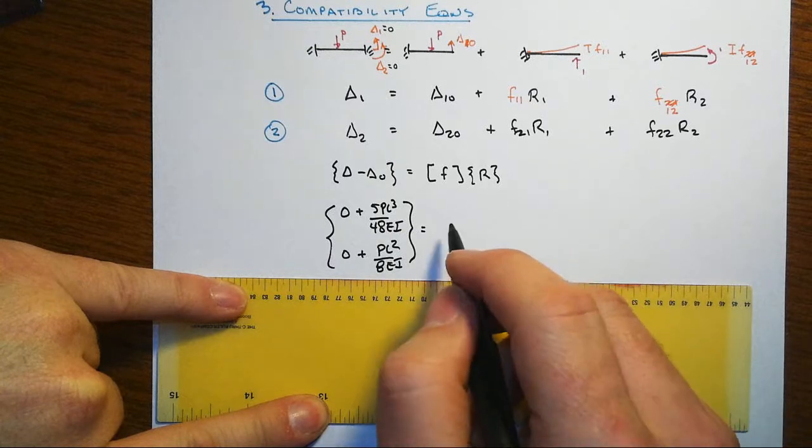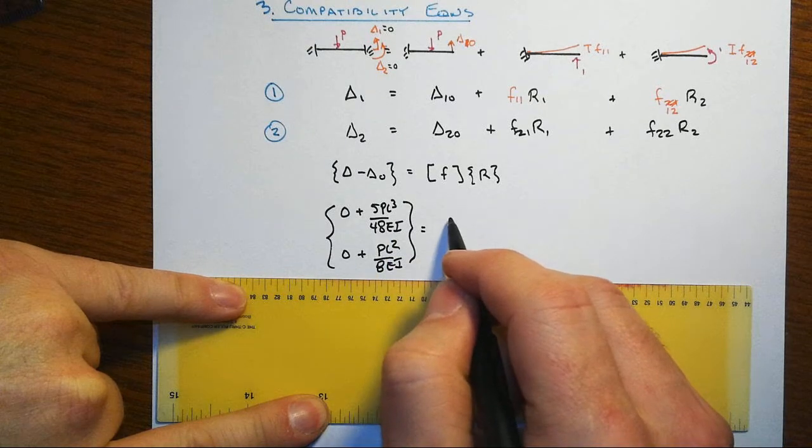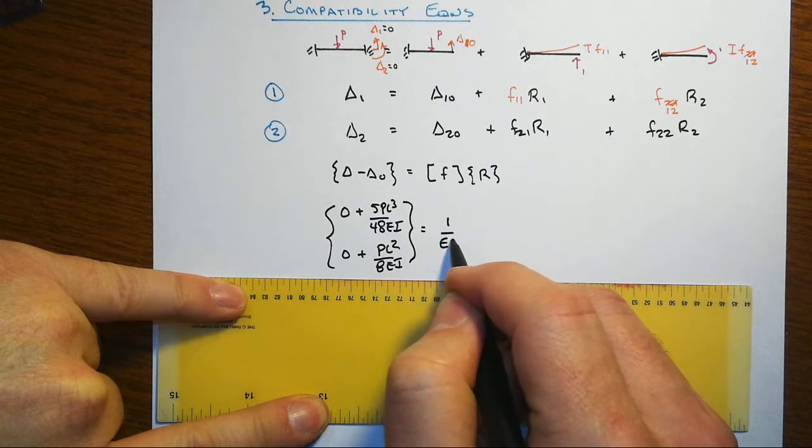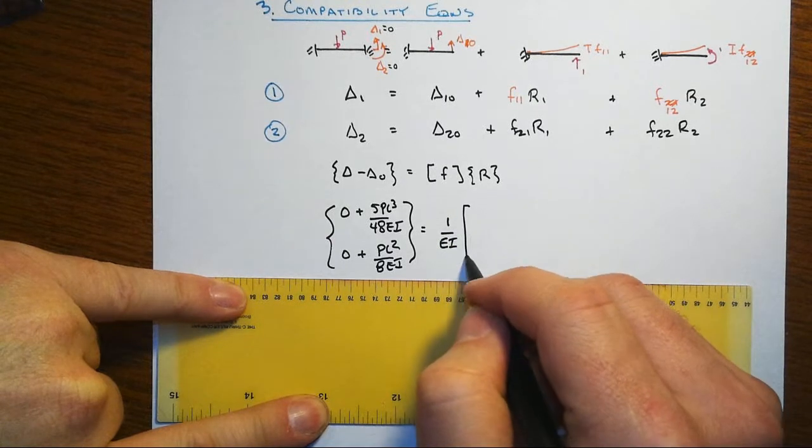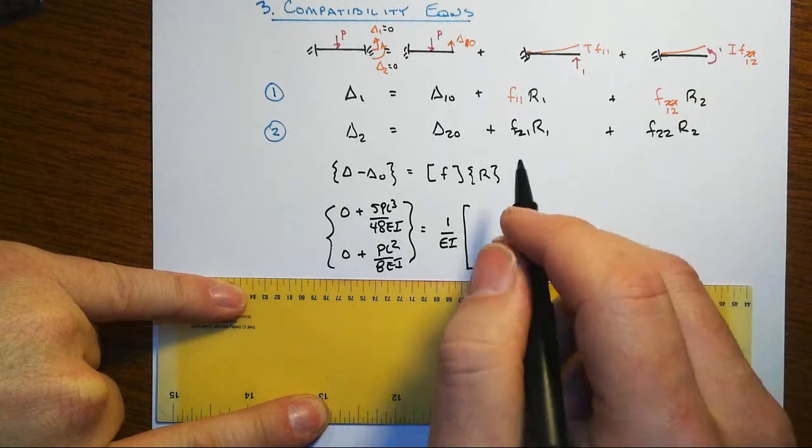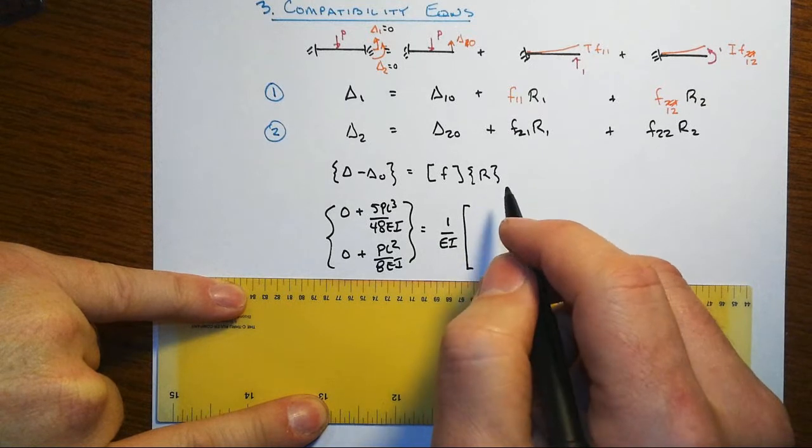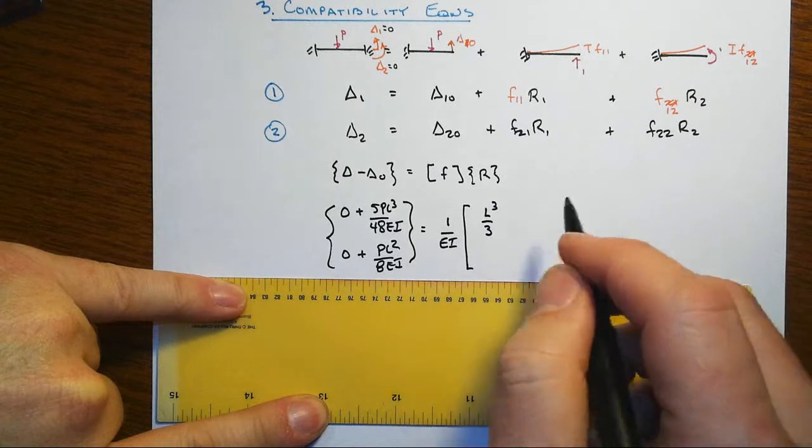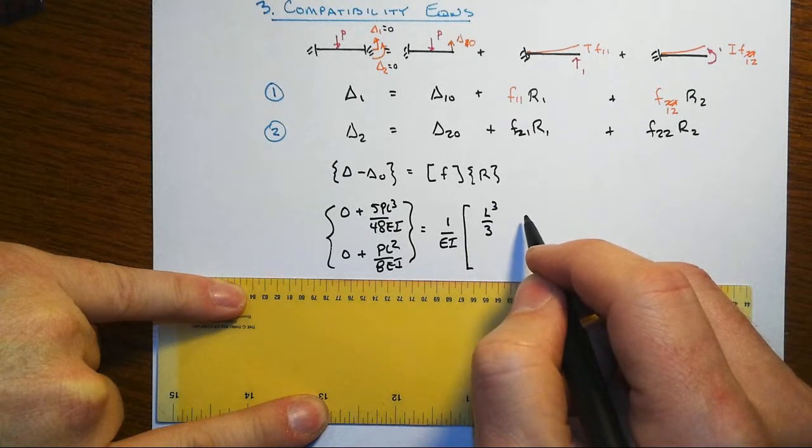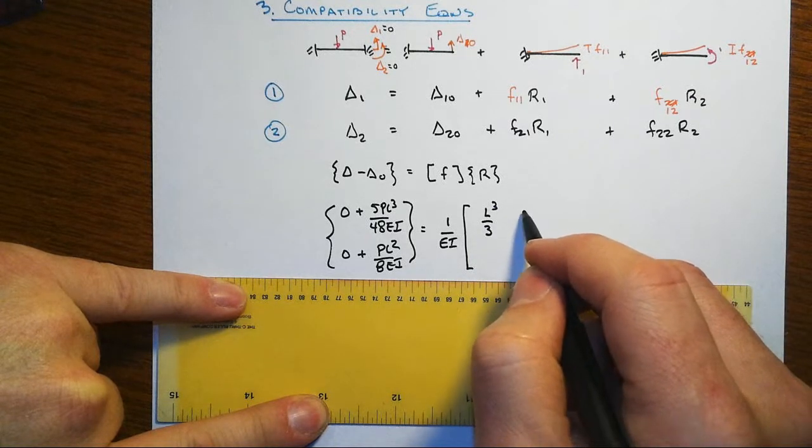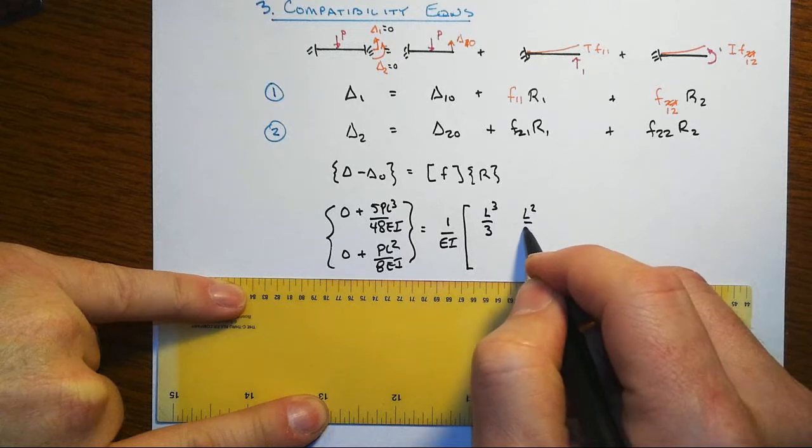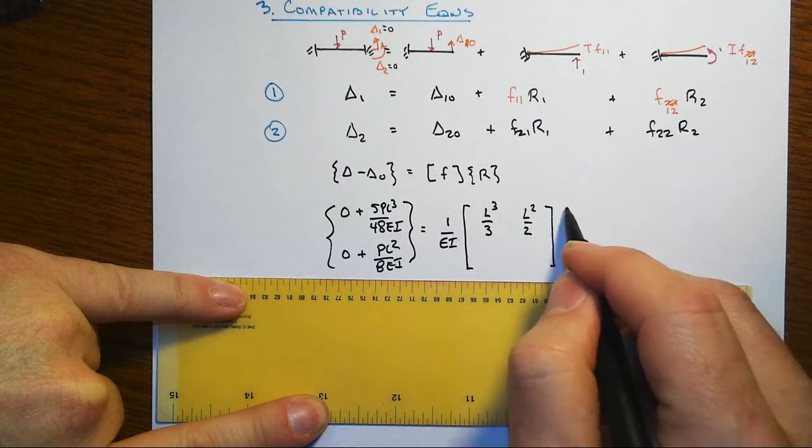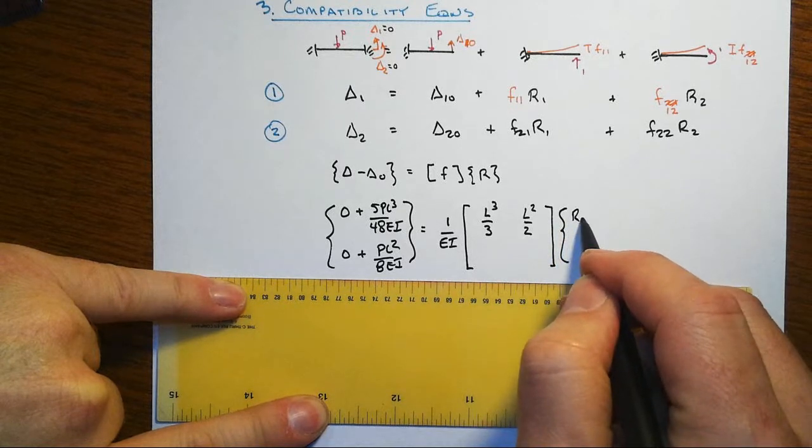In each and every case we have an EI in the denominator that we can pull out. So we'll do that. And then F11 was L cubed over 3 EI and F12 was L squared over 2 EI and respectively multiplied by R1 and R2.